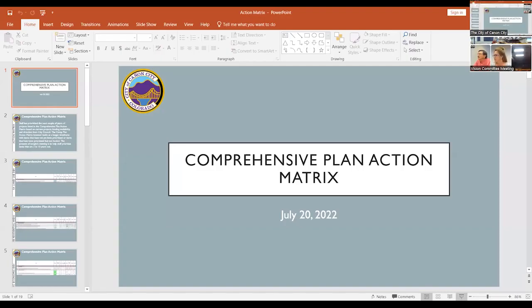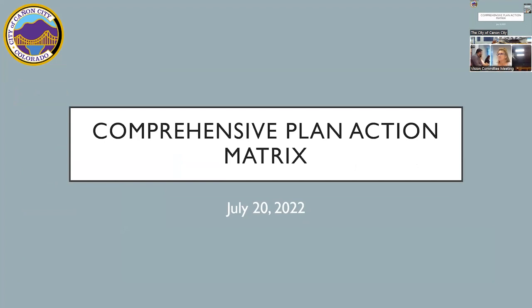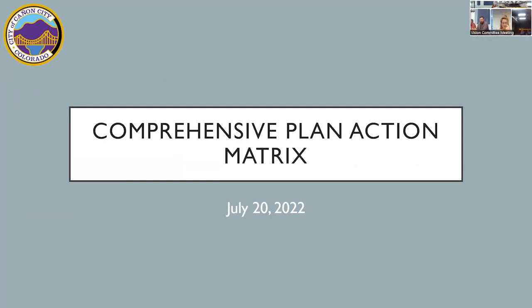Okay, Ryan, we're going to turn that over to you and our staff. So tonight we're going to be talking about the Comprehensive Plan Action Matrix. Last year we completed our comprehensive plan looking out 10 to 15 years into the future — what does the community want to see in those goals? Part of that project is putting together an action matrix, which is a list of roughly 330 items to look at.